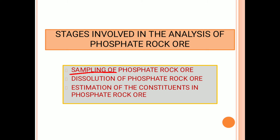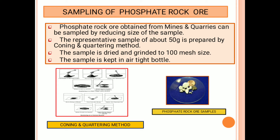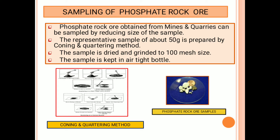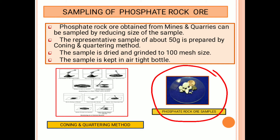Generally, the first stage is sampling of ore, next dissolution of ore, then estimation of constituents. The sampling of phosphate rock ore is nearly the same as iron ore sampling — it is obtained from mines and quarries and can be sampled by reducing the size to about 50 grams using the coning and quartering method. The sample is dried and ground to 100 mesh size using a sieve, then kept in a tight bottle to prevent oxidation.